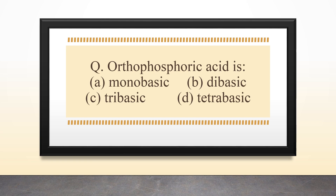Orthophosphoric acid is also an oxo acid of phosphorus. The formula for orthophosphoric acid is H₃PO₄. We have to determine whether orthophosphoric acid is monobasic, dibasic, tribasic, or tetrabasic. To answer this, we draw the structure of H₃PO₄.